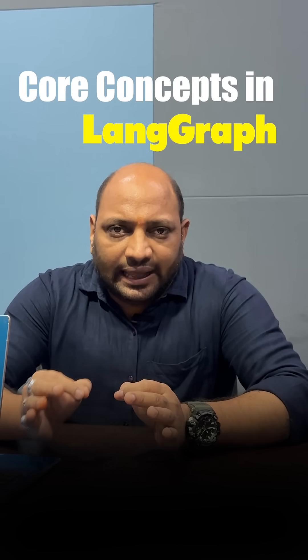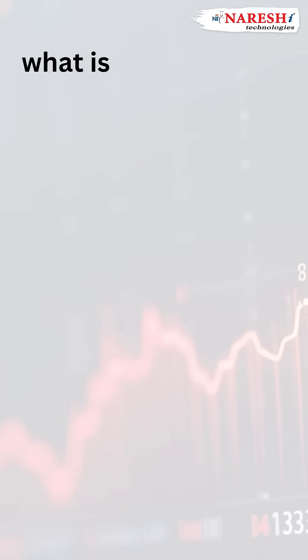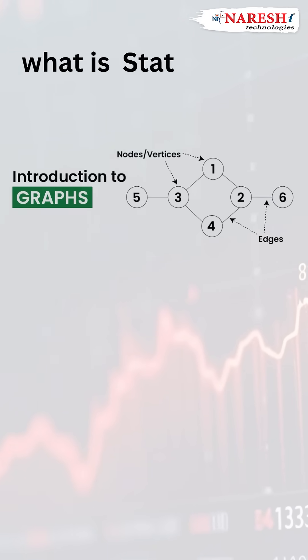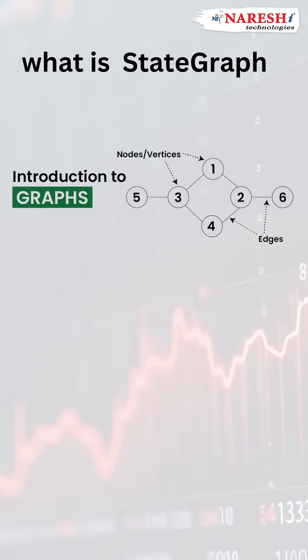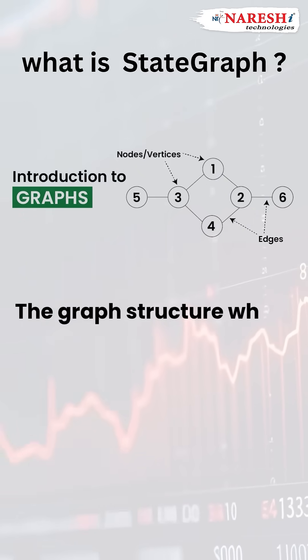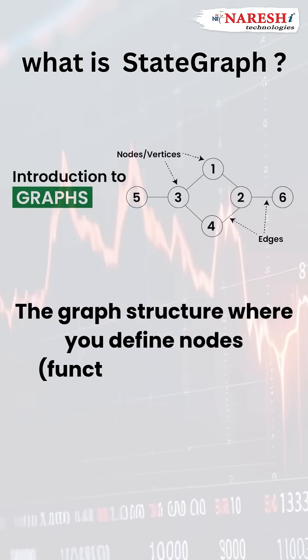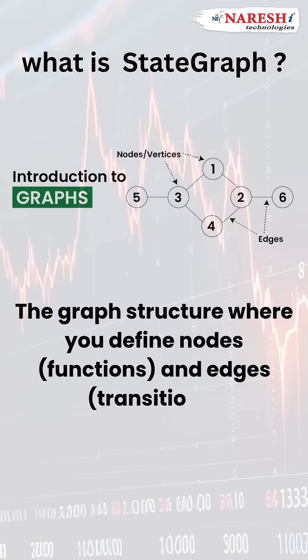Core concepts in LangGraph include state graph, node, edge, state, and end. The state graph is a graph structure where you define nodes like functions and edges like transitions.